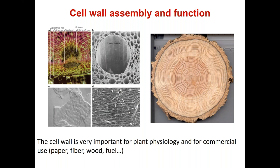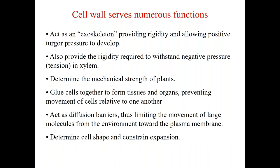Just thinking about the cell wall: it is really important for plant physiology and has been essential for human civilization from its very beginning — paper, fiber, food, wood, and biofuel are all cell wall dependent. The cell wall acts as the exoskeleton, providing rigidity, allowing turgor pressure to build up, and providing the mechanical strength so that plants can grow hundreds of meters in length without buckling or collapsing under their own weight. There are two major cell wall types: the primary cell wall, which all growing cells have — relatively thin and compliant enough to allow expansion — and the secondary cell wall, deposited when cells mature, which is three to four times thicker and gets lignified.